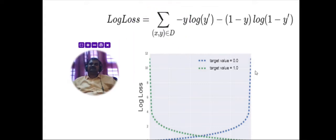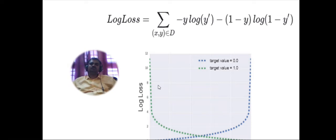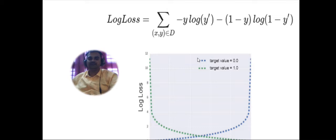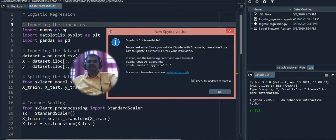Log loss measures the difference between the actual value and the predicted value. The log loss formula is: −Σ(x,y)∈D [y·log(ŷ) + (1−y)·log(1−ŷ)], where y is the actual value and ŷ is the predicted value. This formula allows us to identify how far off our predictions are from the actual values.